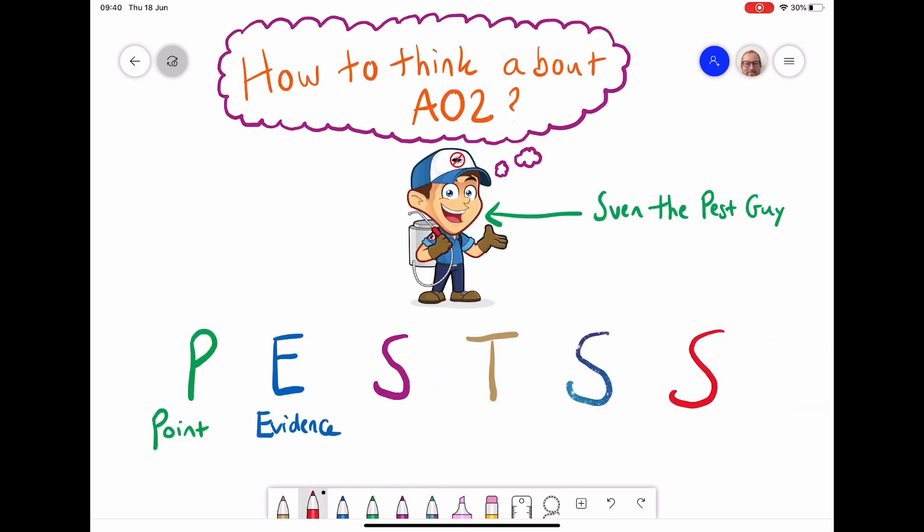To help you start to think about what you might put for an AO2 answer, I've come up with this word PESTS. And here's a little picture of Sven the Pest Guy. Hopefully he's a reminder if you forget the word. Think of that guy with his little pest inspector kit on, and it might help you to think about what you need to do for an AO2 answer.